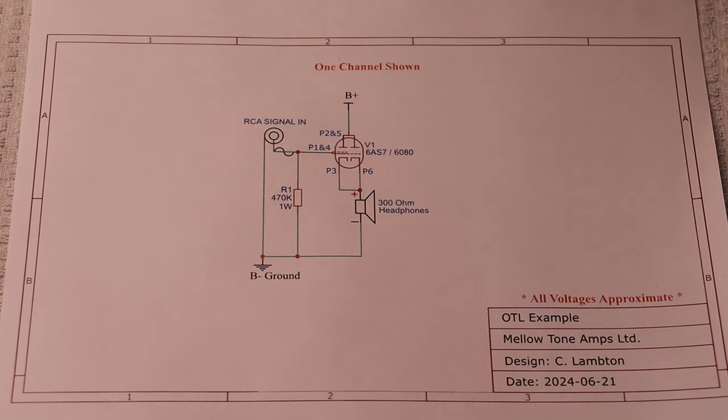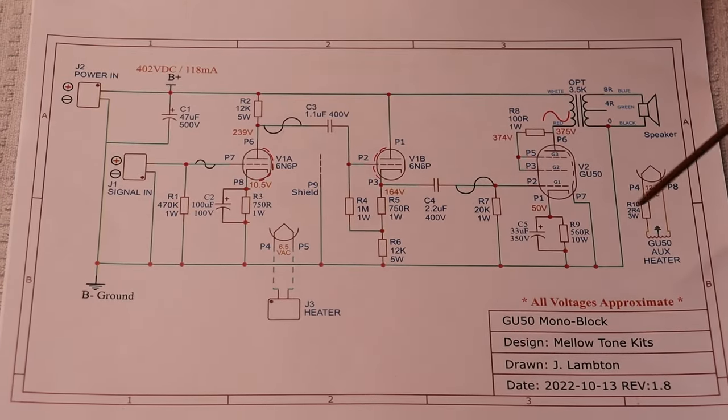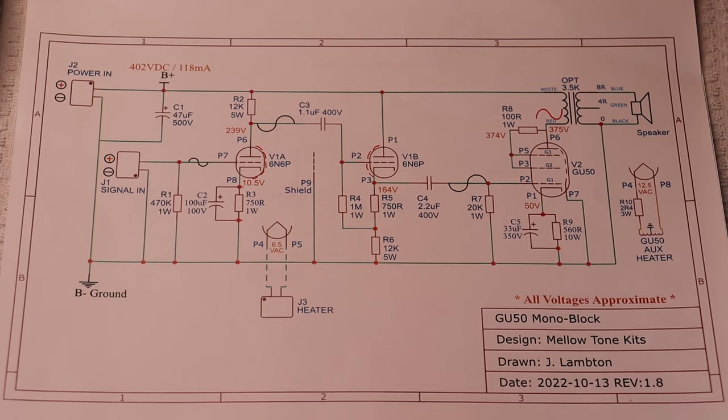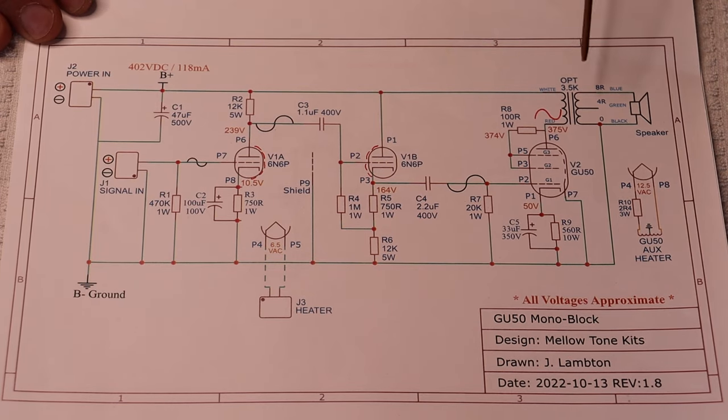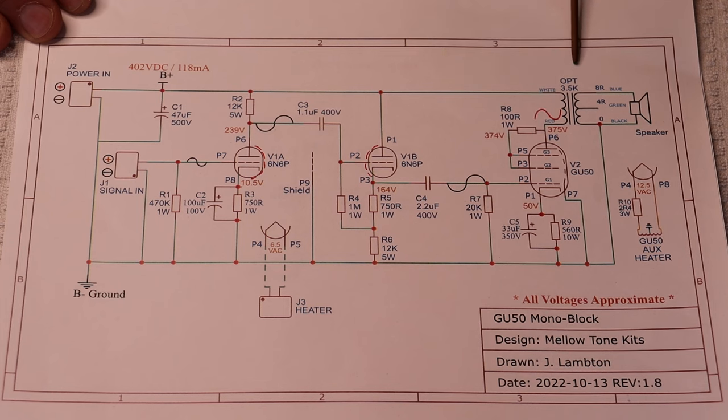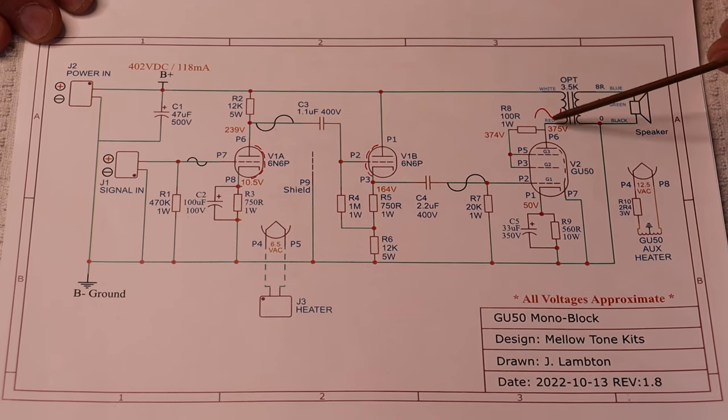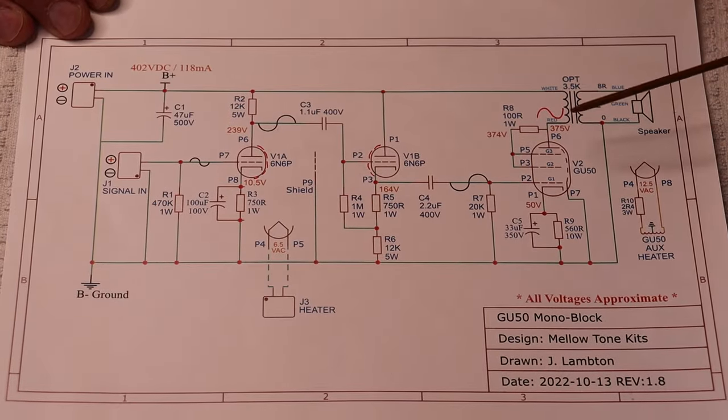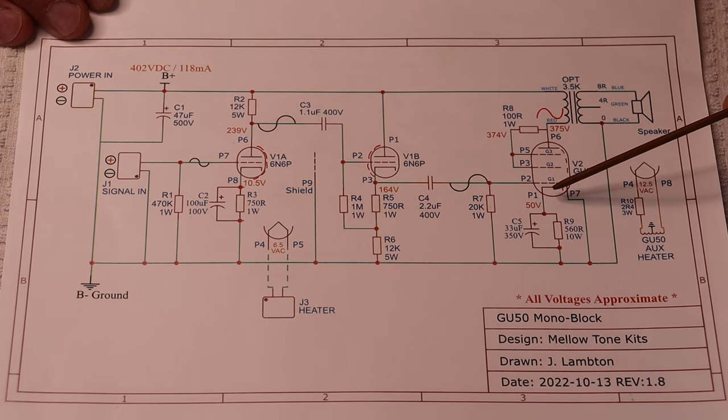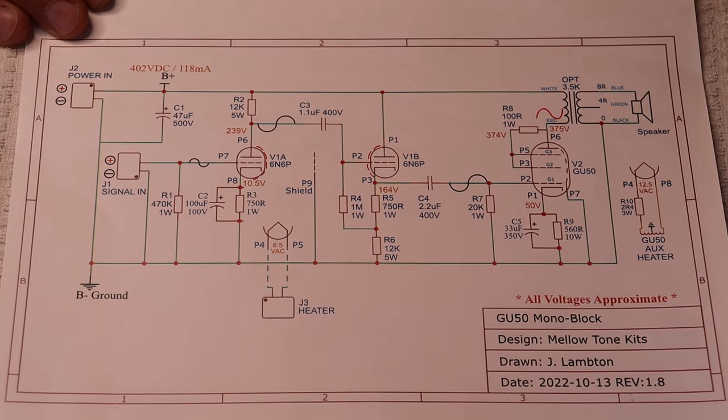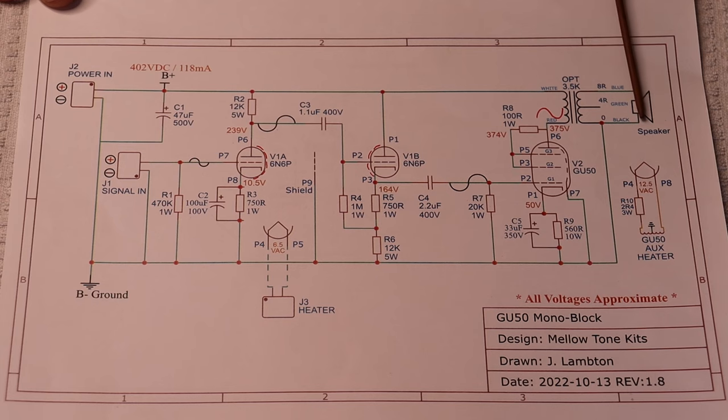Here is our GU50 kit monoblock. There's a lot on here but we just want to focus on this area. This is the GU50 tube and here is our output transformer, and here's our speaker. The B plus high voltage comes through the primary windings of the transformer and lands on the plate. This tube gets biased in a conventional manner using a cathode bias resistor that's bypassed.